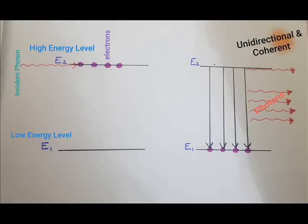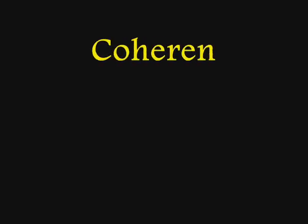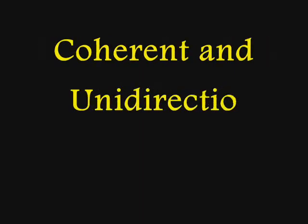Now we're going to talk about stimulated emission of radiation and what's so special about it. In the process of stimulated emission of radiation, we give a photon which strikes an electron, due to which that electron is stimulated and comes down from a higher energy level to a lower energy level, releasing a photon. The photon released as a result of stimulated emission of radiation is coherent and unidirectional with the photon that we have given for the stimulation.